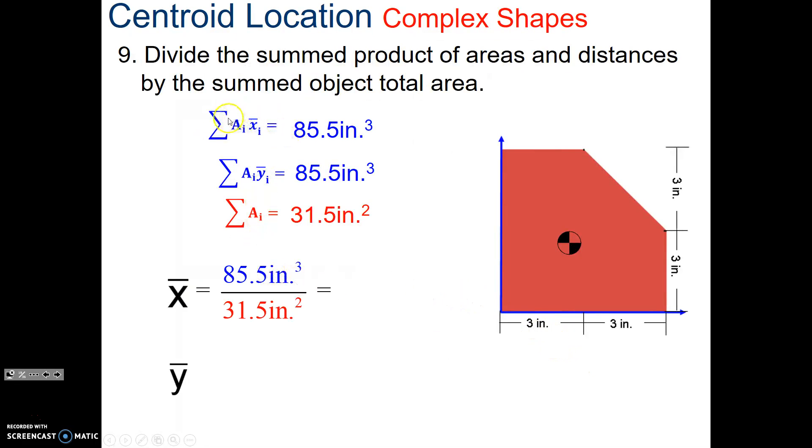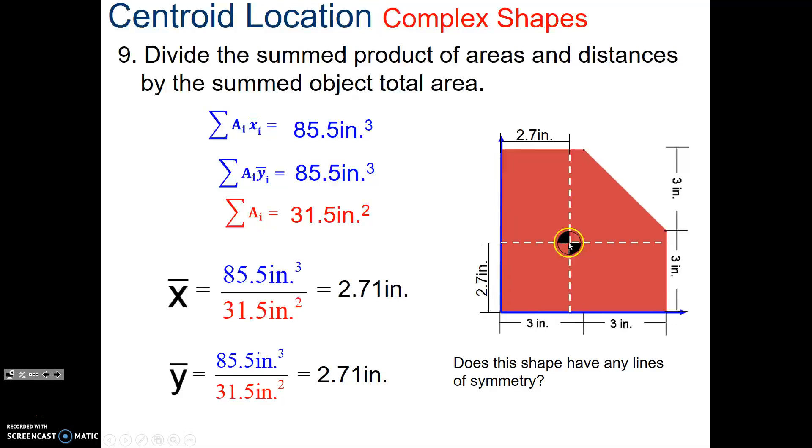Now, we take the sum of the product over its area, and it's 2.71. And then we do that in the y-axis. 85 over 31, and that's going to get me in the y-axis. And now, we have our location. It's at 2.7 inches to the right, and 2.7 inches up. And that gives us our centroid of the irregularly shaped object. Notice, there is a symmetry there.